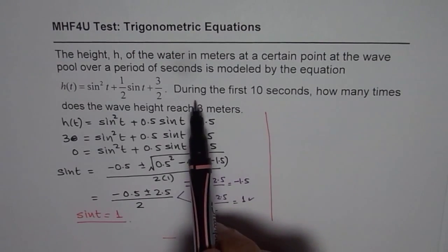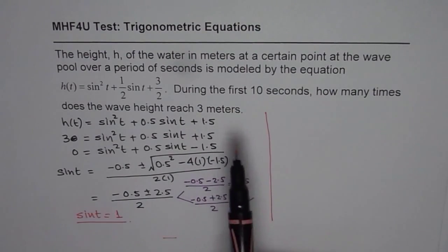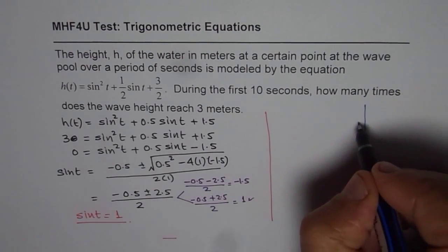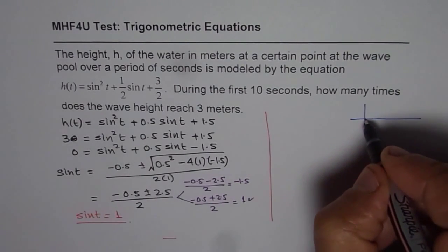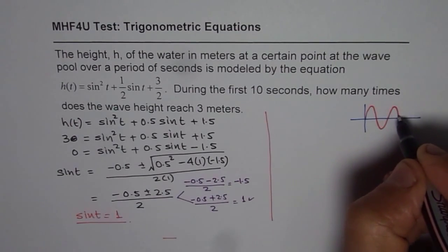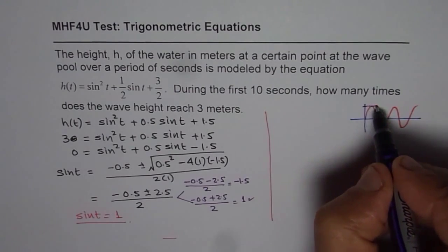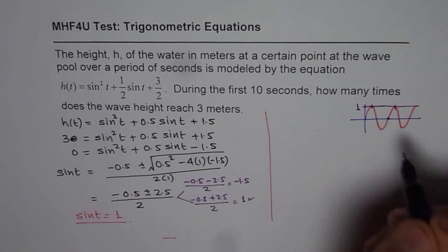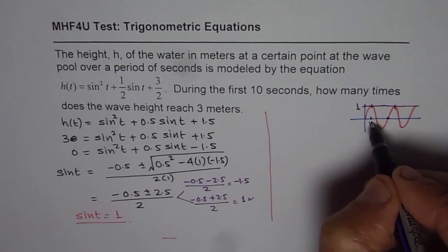Now the question is during the first 10 seconds how many times does the wave height reach 3 meters? So let's solve for this. As far as sin t equals to 1 is concerned, you know about sin function it is kind of like this. So 1 is actually the maximum value it can have. So that is 1. The only value in one time period.